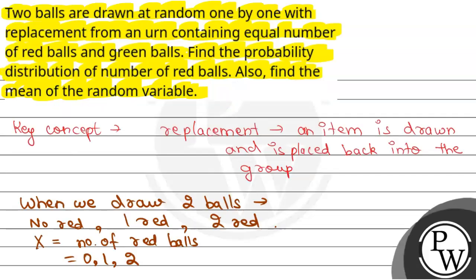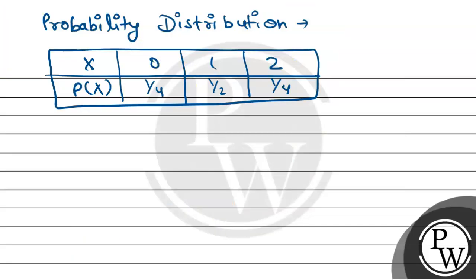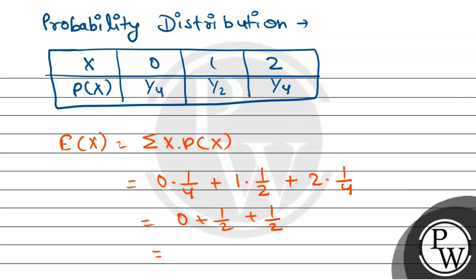Now we have to find the mean of random variable. Mean is E(X), which equals summation of X multiplied by P(X). This will be 0 times 1/4 plus 1 times 1/2 plus 2 times 1/4, which equals 0 plus 1/2 plus 1/2, equal to 1. I hope the concept is clear, thank you.